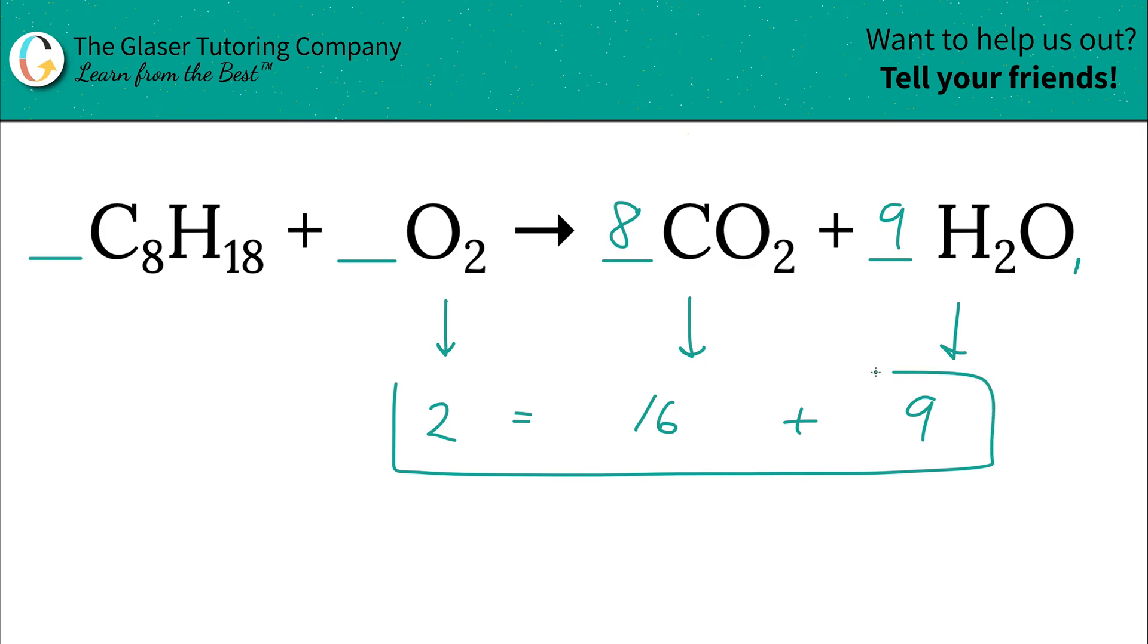Now, somehow this math statement has to work out to be true. And obviously right now it isn't true. Two does not equal 25. So our job is to figure out how to make this thing true. I'm going to introduce a variable X. I can place that variable in one of three spots here, here, or here, because wherever I place that variable will affect the number of oxygen. Well, one of those places is better than the others. Which one is it? This one, that one's better than all the others.